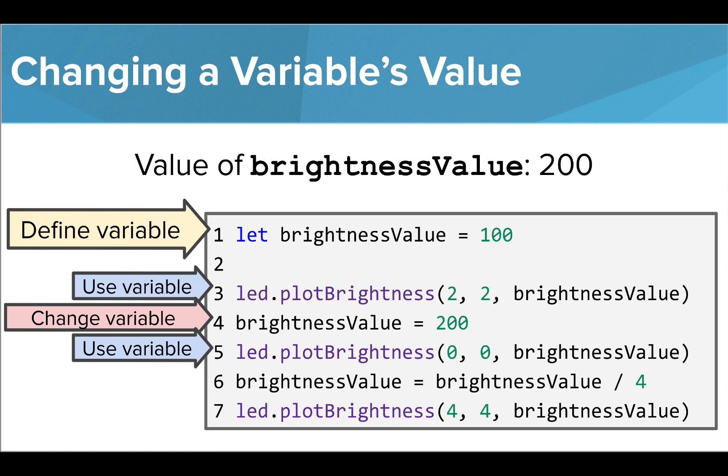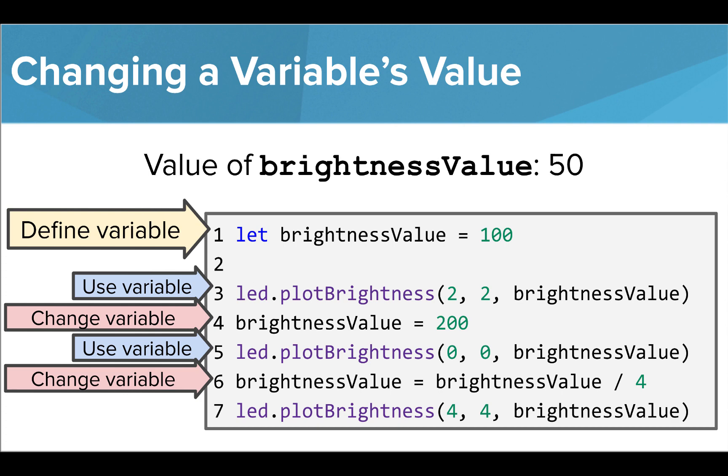On line 6, we are using an equation to change the value of our variable. We are taking the previous value of the variable, which was 200, and dividing it by 4. So our variable now has a value of 50. When we use our variable for the last time on line 7, the final LED we light will have a brightness of 50.